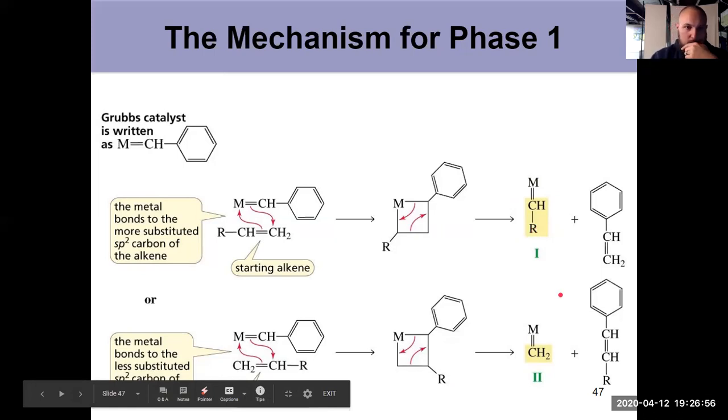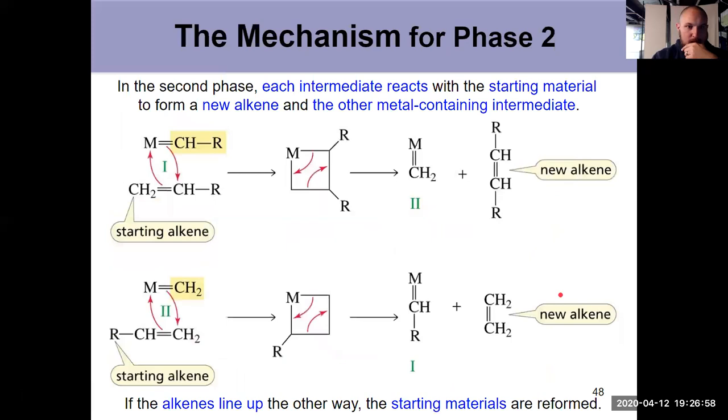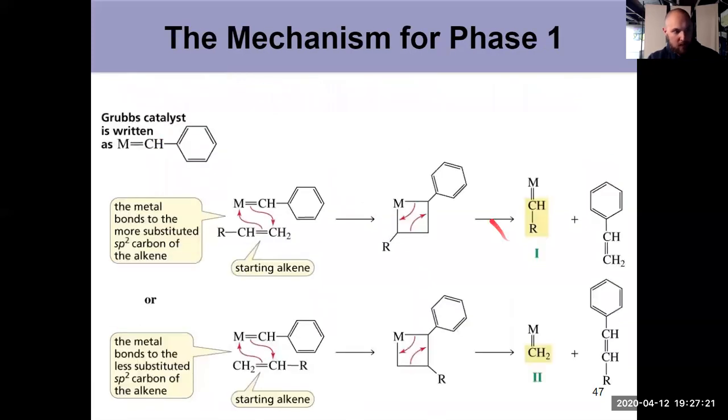Then those intermediates in phase two react with the starting material, again, via a 2+2 cycloaddition. Remember cycloaddition because it's cyclic, two members, two members, hence 2+2. So it's effectively the same mechanism, right? It's a 2+2 cycloaddition. And then just like we saw, cycloaddition and then the ring-opening reaction.